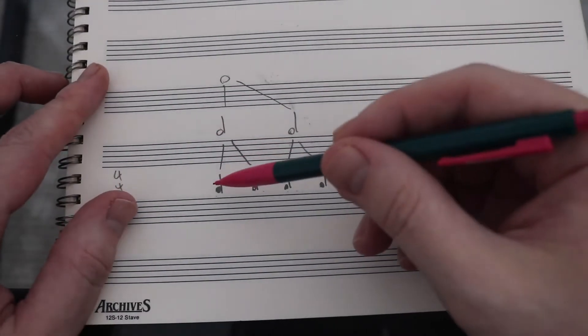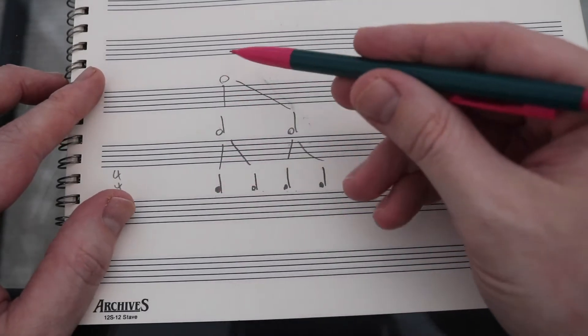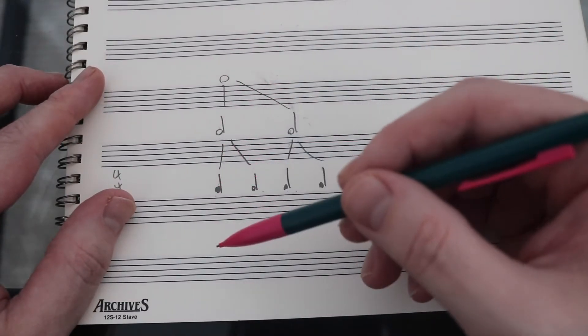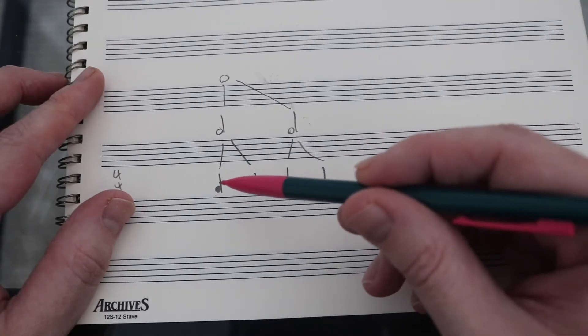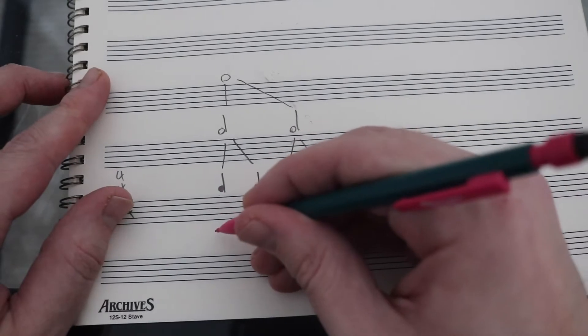When we started last time, we had a quarter note, and we went into bigger and bigger sizes. But what if we want to go into smaller and smaller sizes? Well, a quarter note gets one beat, so the next type of note gets half of a beat, and that would be an eighth note.